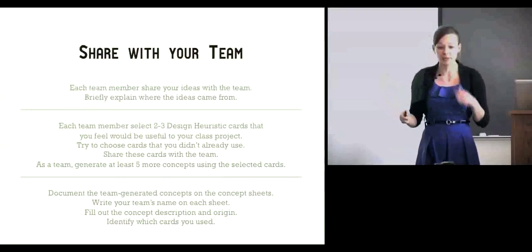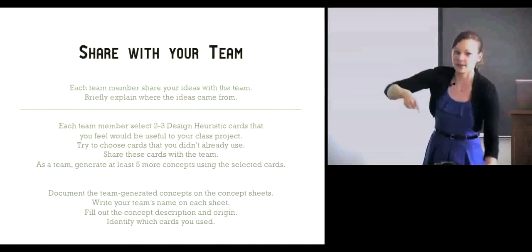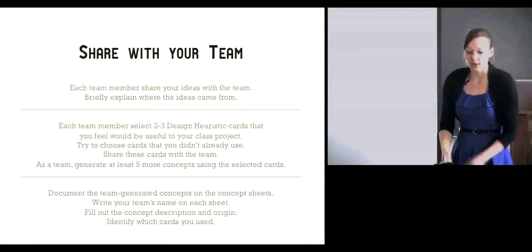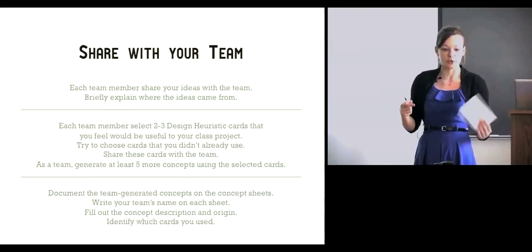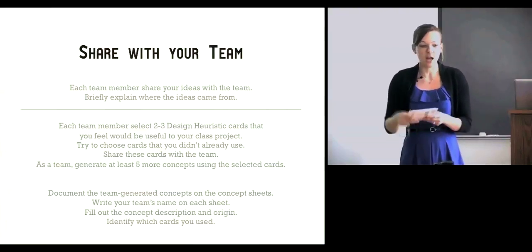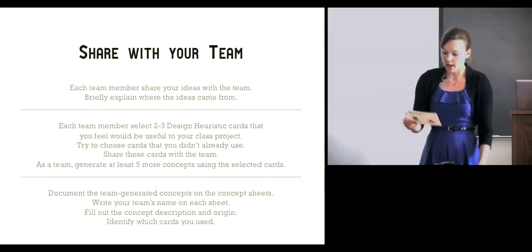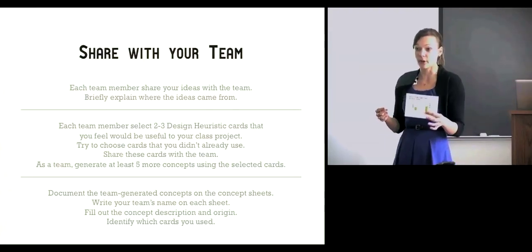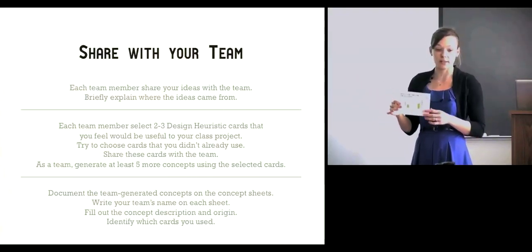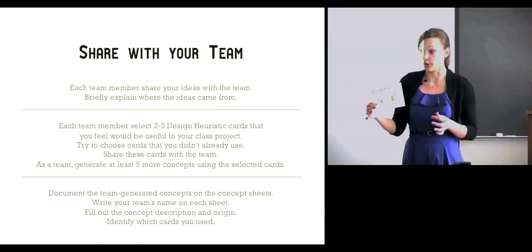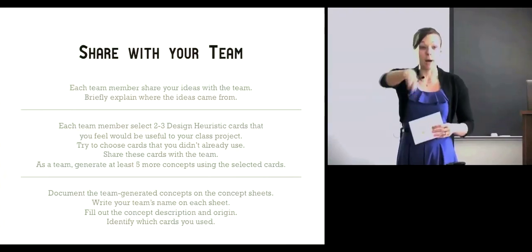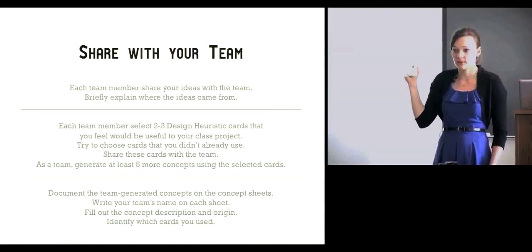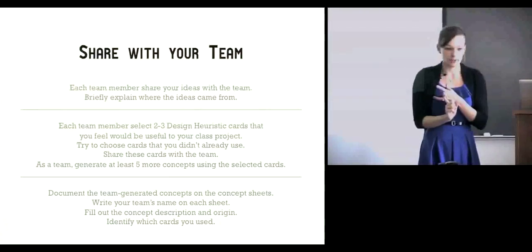Now we're going to move into teams. On your envelope you should have a team number and you should be seated near your team. With your team, share the concepts you came up with and what cards you used. Then pick a couple of cards that each of you had but didn't apply yet — cards you thought didn't make sense — and put those out there. As a team, try to generate five more ideas using cards you haven't used before. Among your group you should have about 75 of the 77 cards.